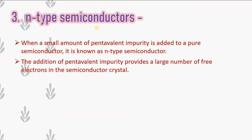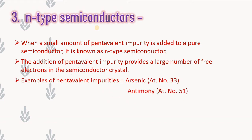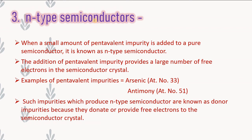The addition of pentavalent impurity provides a large number of free electrons in the semiconductor crystal. Arsenic and antimony are examples of pentavalent impurity. Such impurities which produce an n-type semiconductor are known as donor impurities because they donate or provide free electrons to the semiconductor crystal. So the pentavalent impurity provides a large number of free electrons.